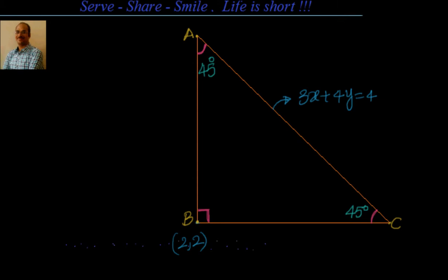Hello friends, welcome back. Let's look at this example. We have been given an isosceles right triangle. So we know we have two 45 degrees there and one 90 degrees. That's an isosceles right triangle. We have been given the equation of the hypotenuse, that is 3x plus 4y equal to 4. And we have been also told that the opposite vertex is (2,2). Now we have to find out the equations of AB and BC.